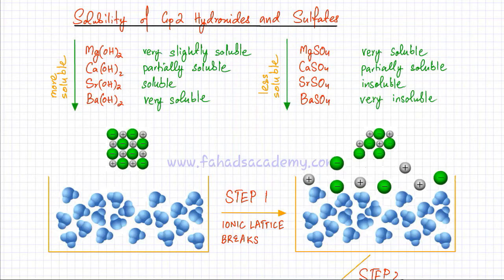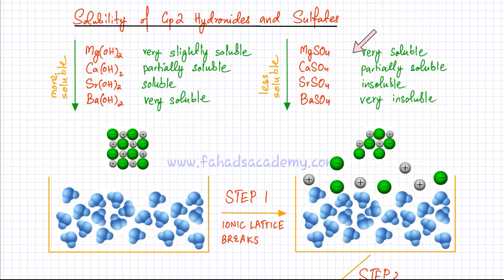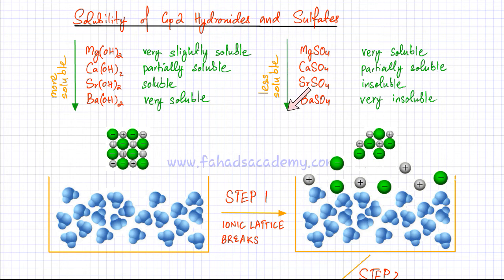Similarly, if we talk about sulfates — magnesium sulfate, calcium sulfate, strontium sulfate, and barium sulfate — the solubility decreases as you move down the group. Magnesium sulfate is very soluble, whereas calcium sulfate is partially soluble. Strontium sulfate is even more insoluble, and barium sulfate is very, very insoluble. There's one anomaly: the solubility of hydroxides increases as you move down the group, but the solubility of sulfates decreases as you move down the group.